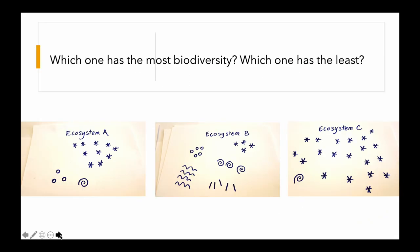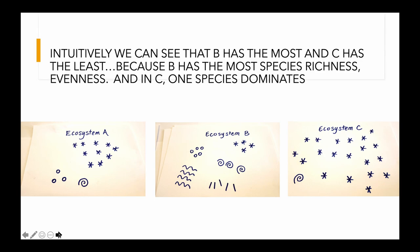Which one of these has the most biodiversity and which one has the least? If you said Ecosystem B has the most biodiversity, you would be correct. If you said Ecosystem C has the least biodiversity, you would also be correct, and probably Ecosystem A is somewhere in between. Now we know this intuitively, but how would Simpson's Index of Biodiversity give us the answer? We can see that B has the most and C has the least diversity, because B has the most species richness and evenness, and in C, one species dominates.